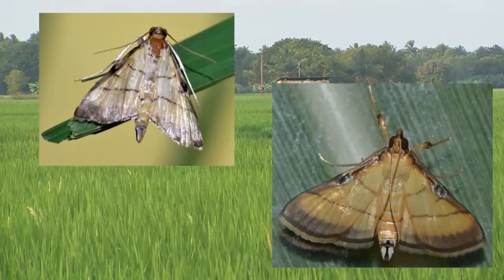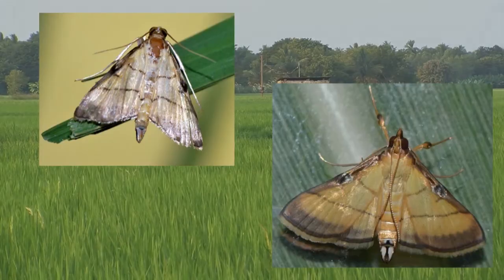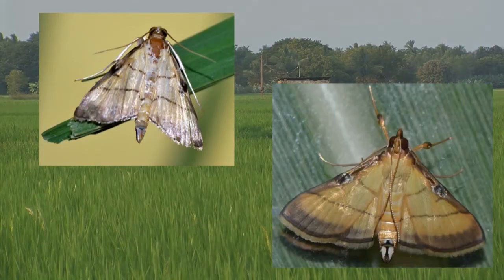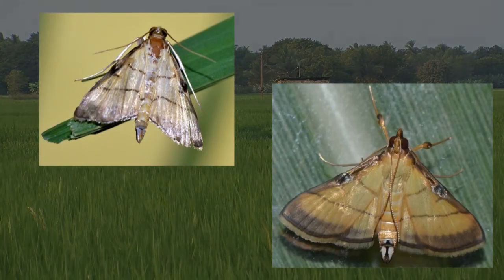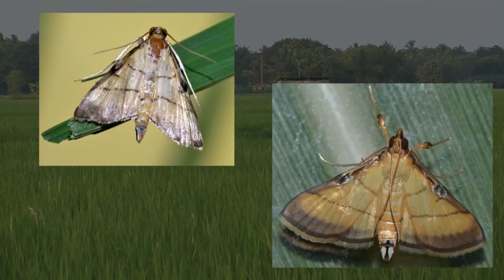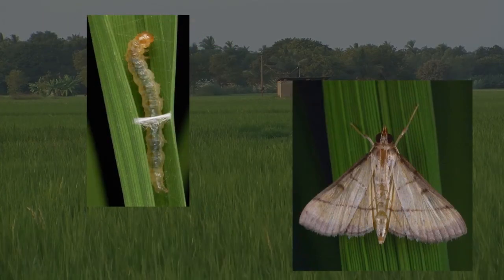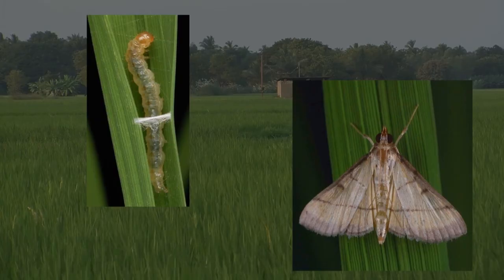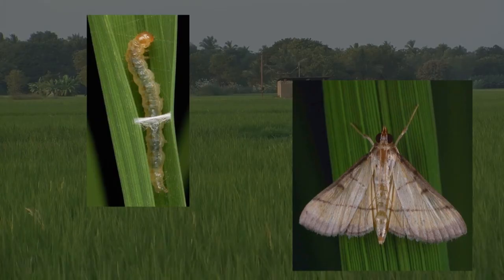The rice leaf folder adult is a brown moth with wavy lines in the center of its wings. The female moth lays oval-shaped eggs in rows on the midrib of the rice leaf.